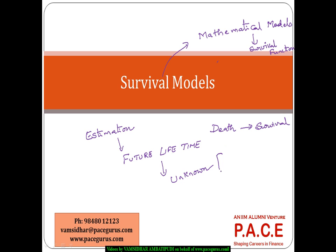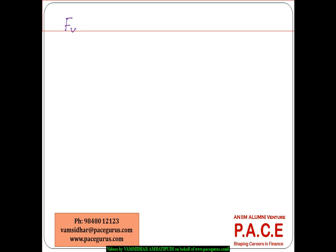We will try treating the future lifetime of a person as a random variable — that is the starting point behind this entire exercise. So for any person, if I am interested in finding out the future lifetime, the future lifetime will be denoted as a random variable.